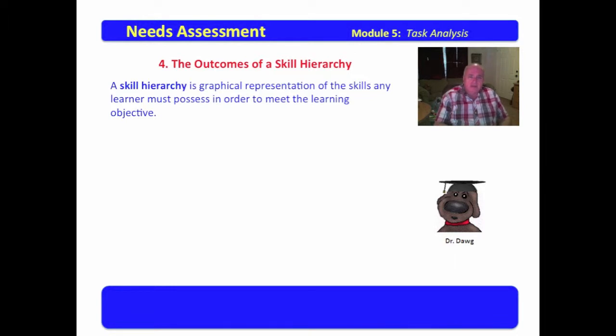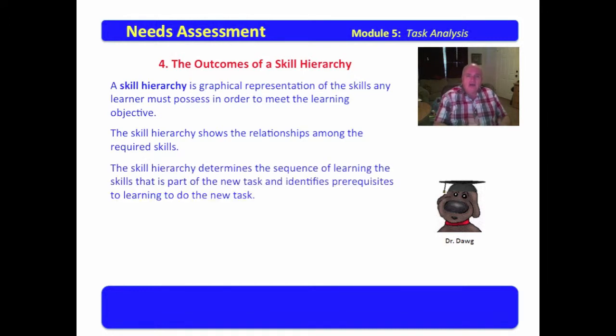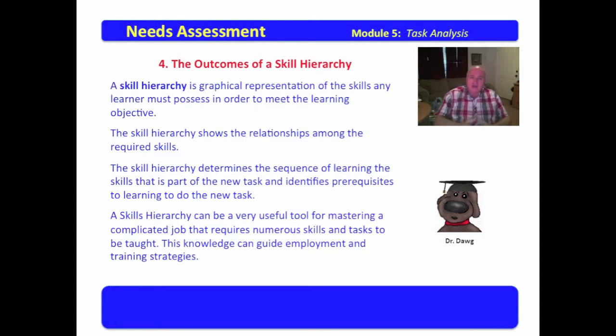Now, the outcomes of a skill hierarchy, a skill hierarchy is a graphical representation of the skills any learner must possess in order to meet the learning objective. The skill hierarchy shows the relationship among the required skills, and the skill hierarchy determines the sequence of learning the skills that is part of the new task and identifies prerequisites to learning to do the new task. A skills hierarchy can be a very useful tool for mastering a complicated job that requires numerous skills and tasks to be taught. The knowledge can guide employment and training strategies. In other words, if we can get a good skill hierarchy, and we can get it laid out in sequential step, we know step one, step two, step three, the things and how they relate, then it lets us focus on each piece of the skill hierarchy, and when we can master that, then we come up with a very good plan for accomplishing the desired task.